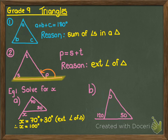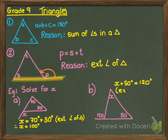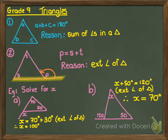Now let's look at one which is a little bit more interesting. There's a triangle with an exterior angle of 120 degrees. I would say that X plus 50 equals 120 degrees because of the exterior angle of triangle — those are the two angles on the opposite side added together. Solving for X by subtracting 50 from both sides gives X equal to 70. So that's two reasons: sum of angles in a triangle and exterior angle of triangle.